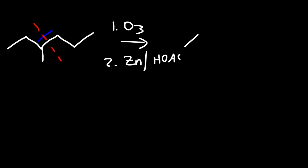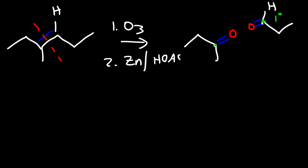I'm going to draw what I have left over after it's been split in two. All I need to do is add an oxygen atom. Keep in mind there's a hydrogen atom here. You can see that I have a ketone and an aldehyde. After splitting, if this carbon is primary it's going to be an aldehyde; if it's secondary, it's going to be a ketone. I can redraw the products — I have 2-butanone and propanal as my answers.